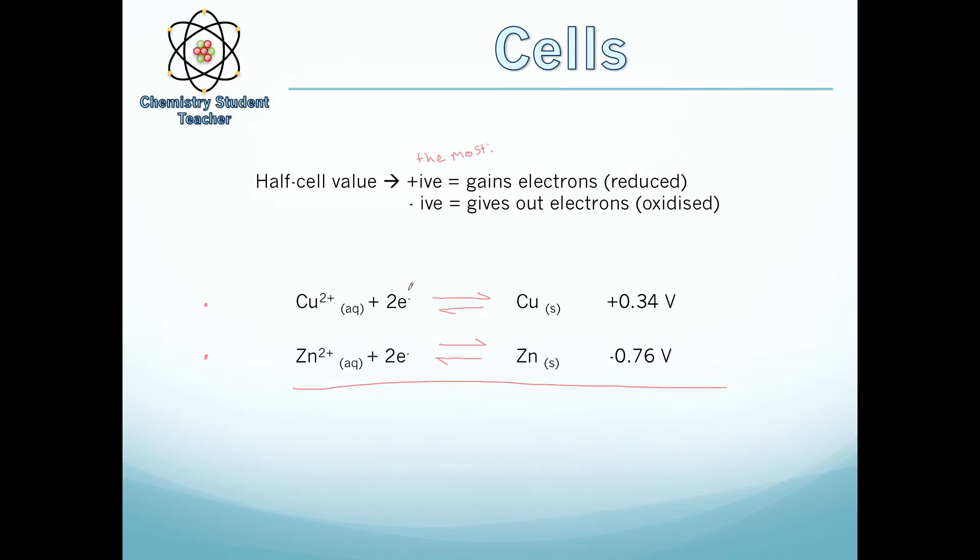So in this case, the most positive is the copper half cell, meaning that it's more of a forwards reaction. It's getting those two electrons to form solid copper. Whereas the most negative is the zinc half cell. And this means it's going from zinc solid to the zinc ion and giving out electrons.